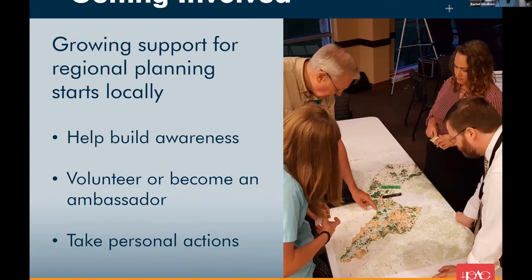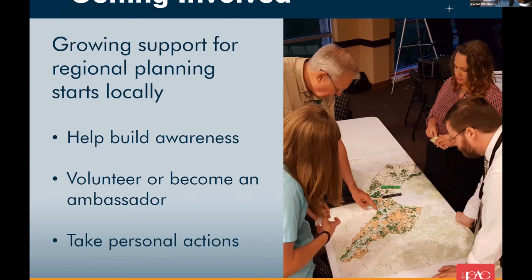We kind of went on a tangent, but let's remember the flow: we started at state and federal level, moved to local, and now let's talk about what we can do at the individual level. We can do all this work on watershed protection plans, but we really don't have any momentum unless there's local buy-in. At the individual level is really where these things are made or broken. We need your help to build awareness of these plans taking place in the watershed, and we ask that you volunteer or become an ambassador with local environmental groups.